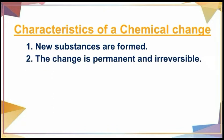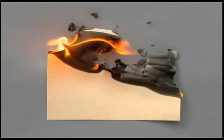Second, the change is permanent and irreversible. When a piece of paper is burned, a new substance — ash — is produced. Even when the burning is stopped, the ash cannot be changed back to paper. This shows that the formation of ash from paper is a permanent and irreversible change.